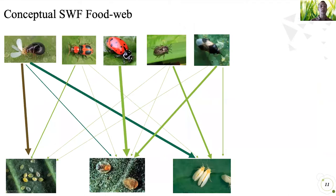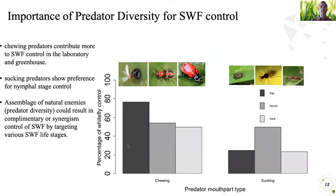If we put those together, we can form a conceptual food web where these predators are connected to different life stages of the whiteflies, and the strength of the line shows their relative contribution to different life stages. Diversity within this system and promoting diversity of these predators is likely important because of that. Looking at how these predators consume different groups, the beetles tend to be chewing predators and the sucking predators are usually the bugs. The chewing predators are contributing to quite a few of the different life stages, whereas the sucking predators contribute more so to the nymph stages.